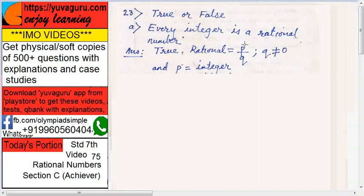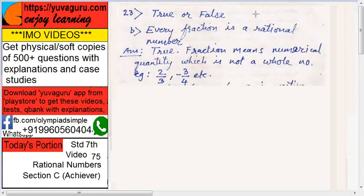So everything can be written as p upon q. Therefore, every integer is a rational number. Every fraction is a rational number - that is also true. Why? What is fraction? Fraction means numerical quantity which is not a whole number.